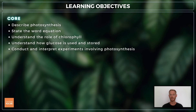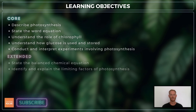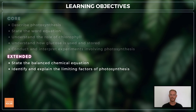For topic 6.1, you need to describe and state the word equation for photosynthesis, understand the role of chlorophyll, understand how the carbohydrates produced by photosynthesis are used and stored, and conduct and interpret several experiments relating to photosynthesis. For extended, you also need to state the balanced chemical equation and explain the limiting factors of photosynthesis.